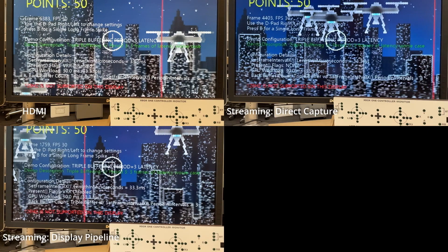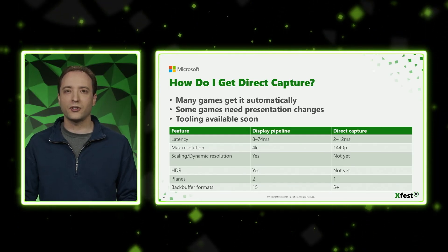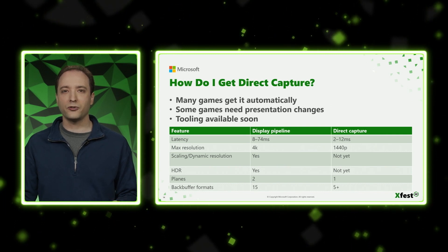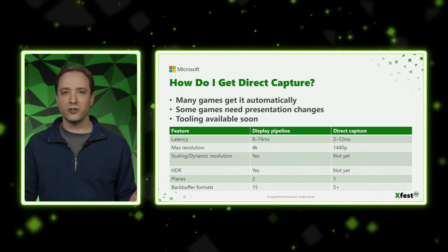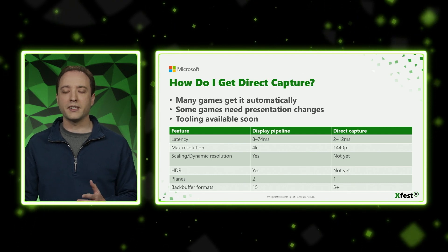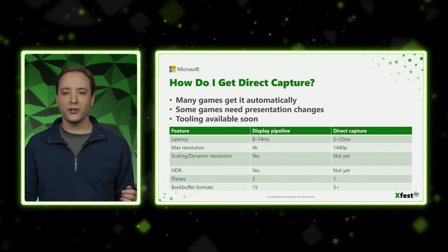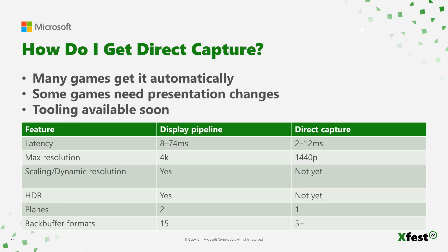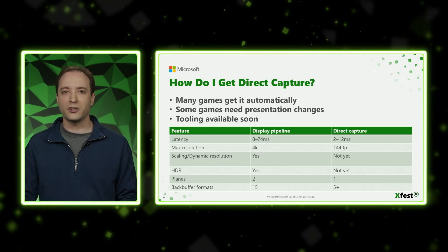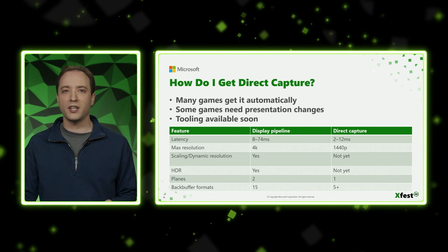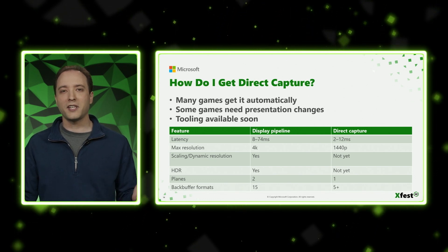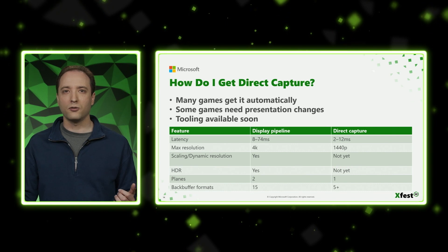So hopefully you're now thinking to yourself: how do I get direct capture in my game? The good news is many games get direct capture automatically. However, since direct capture reproduces hardware features in software, we're adding more support over time, and some of those features are limited by performance. You can see a table at the bottom of the slide showing where we are right now and which features we haven't implemented so far. It also shows the latency win for direct capture and a resolution difference. We also have tooling coming up soon where you'll be able to test your game and find out: am I getting direct capture, and if not, what do I need to change?